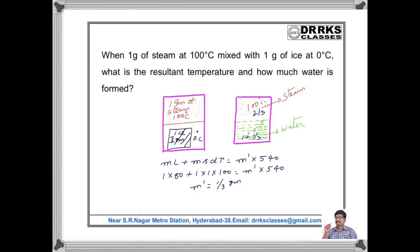Heat lost by steam equals heat gained by ice. When ice melts it absorbs 80 Calories, and during the rise in temperature it absorbs 100 Calories — total 180 Calories absorbed from the steam. This means only a part of the steam, M' = 1/3 gram, is condensed into water at 100°C. The remaining 2/3 gram stays as steam. Finally, 1 + 1/3 = 4/3 grams of water is present at 100°C, and 2/3 gram of steam remains in the container.